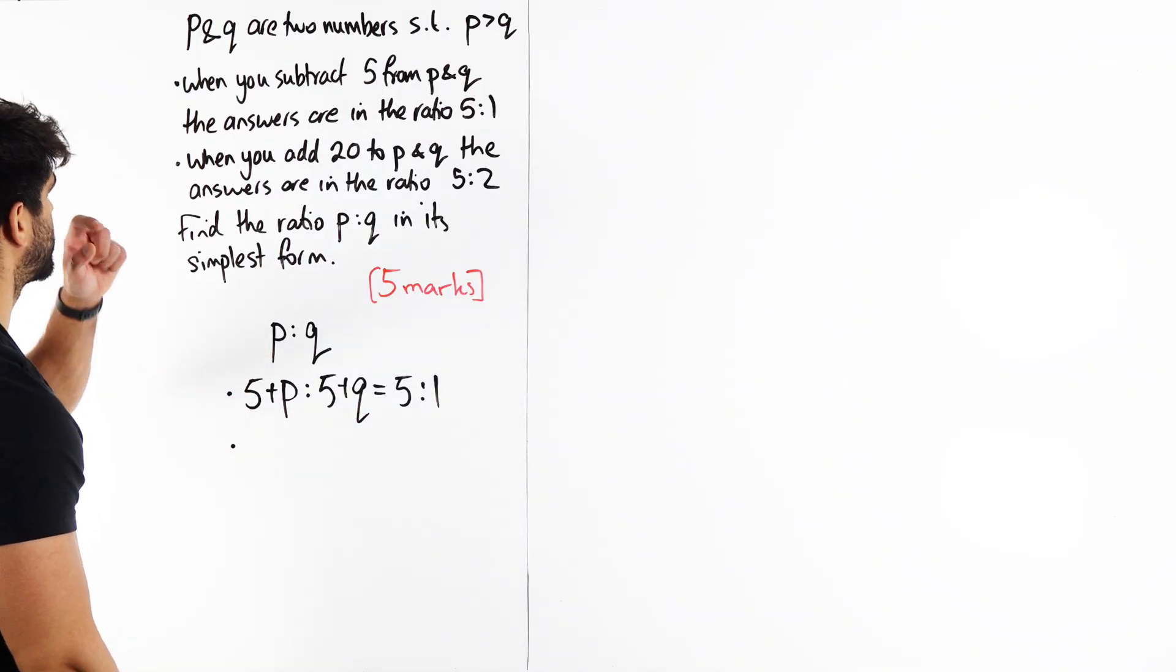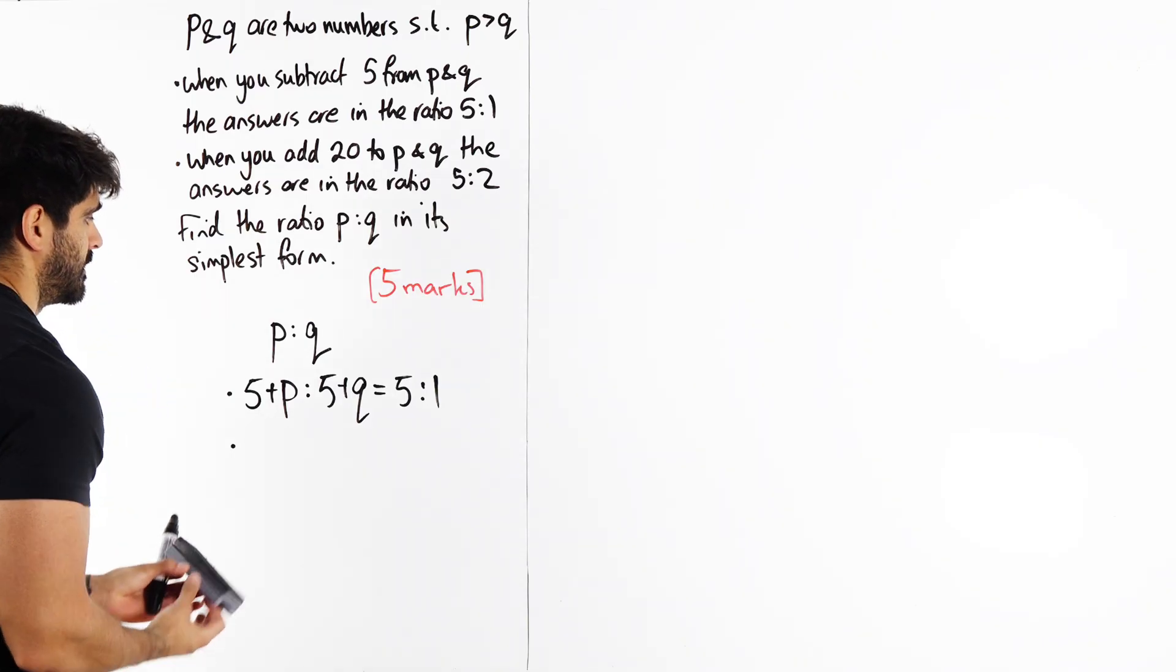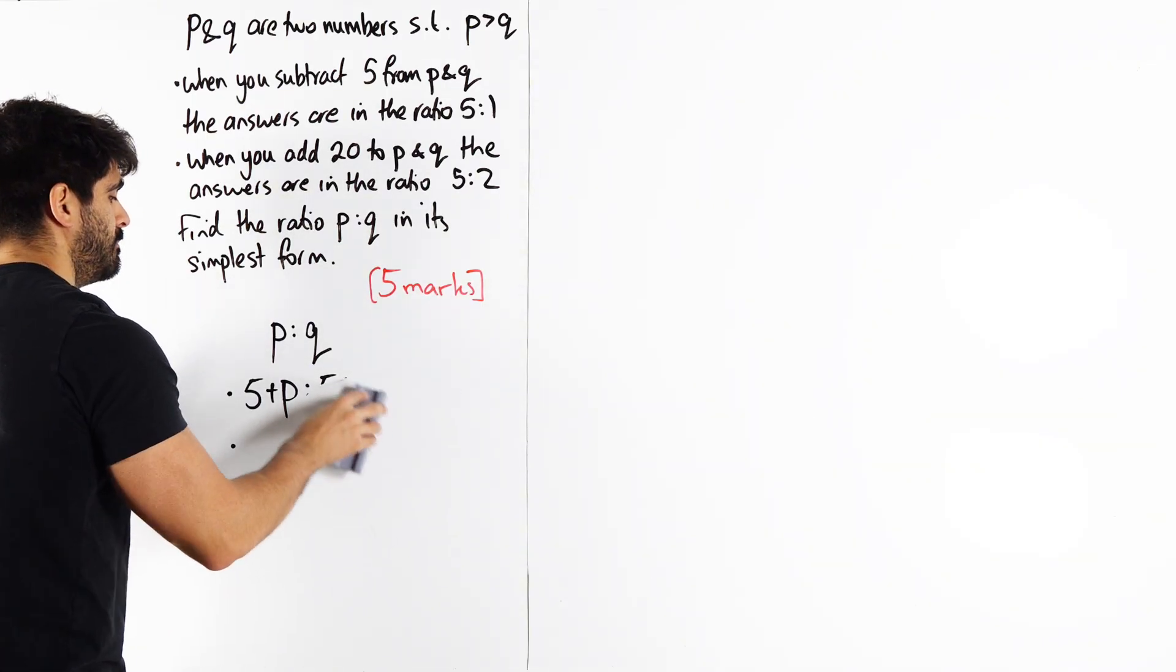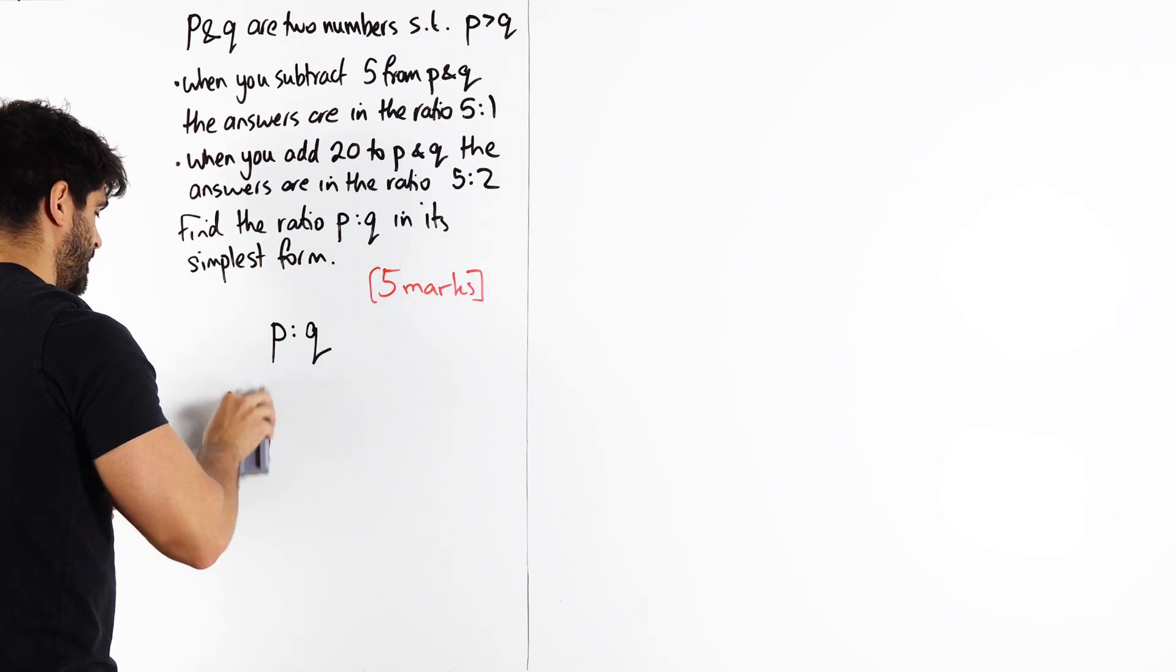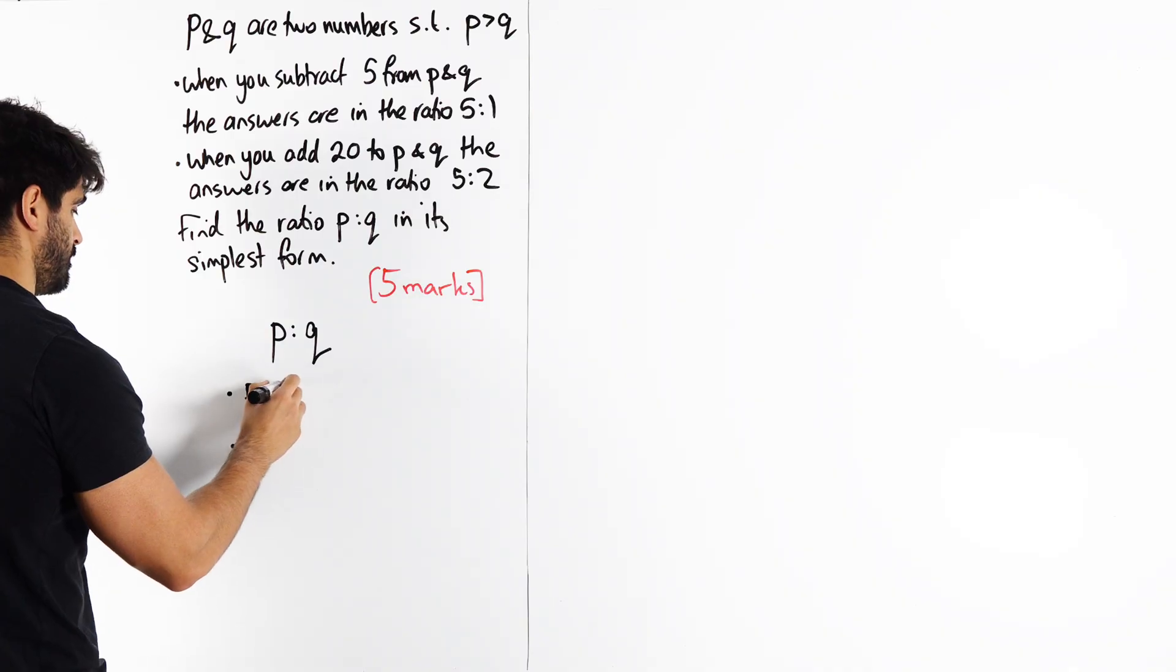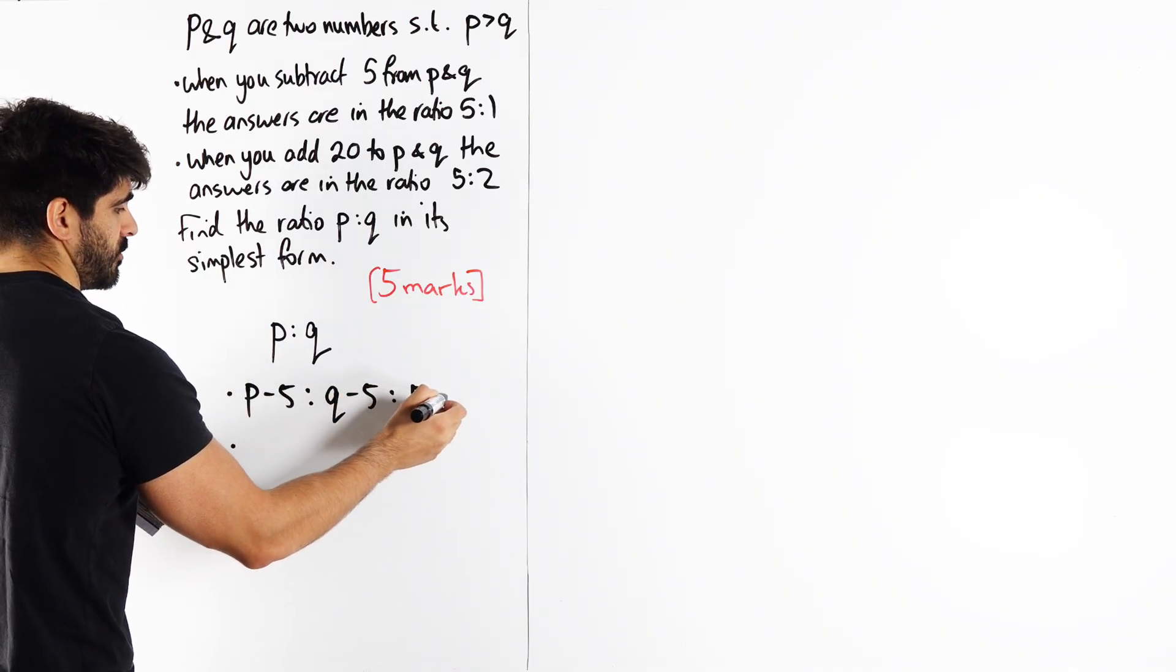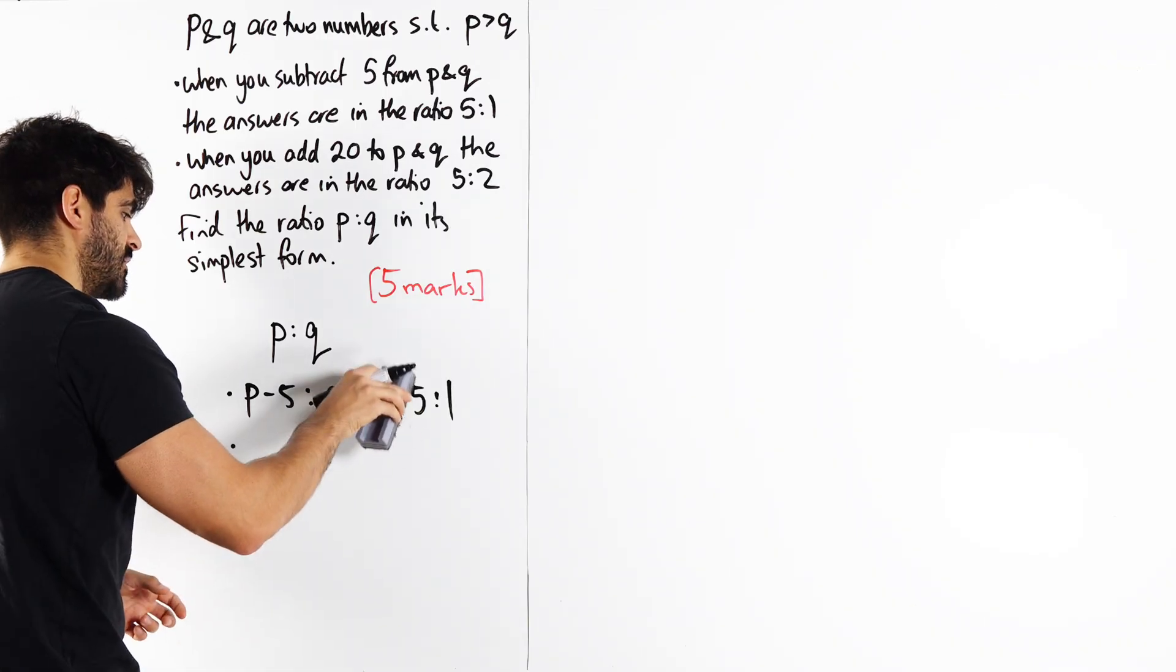The second one is saying if you, oh sorry, if you subtract 5, my bad. So we have P and Q. If we subtract 5 from them, we get the ratio of 5 to 1. That should be an equal sign.